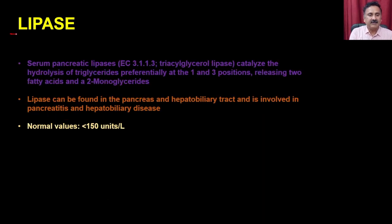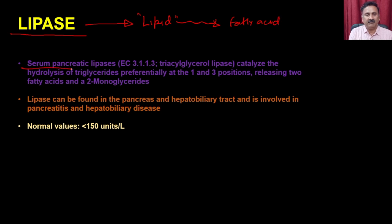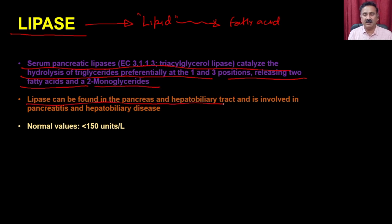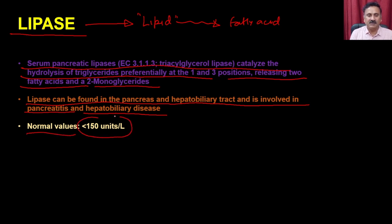Then we have lipases. Lipases are used for the degradation of lipids, producing fatty acids. Serum pancreatic lipase catalyzes the hydrolysis of triglycerides preferentially at the one and three positions, releasing two fatty acids and monoglycerides. Lipase can be found in the pancreas and hepatobiliary tract, and it is involved in pancreatitis and hepatobiliary disease. Normal levels are within less than 150 units per deciliter.